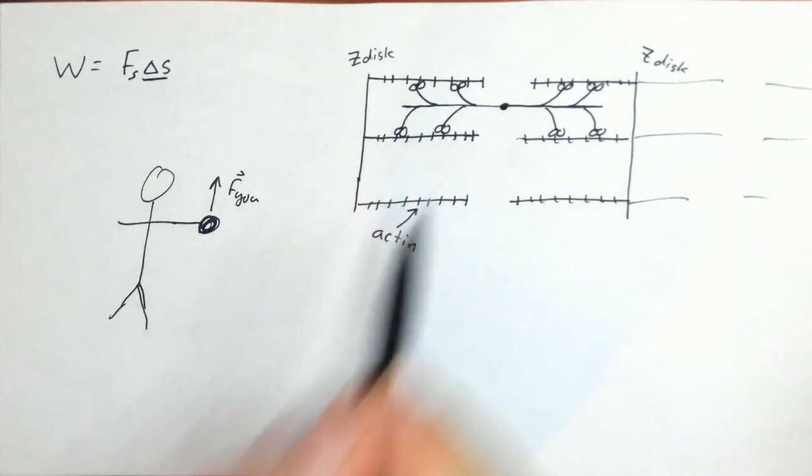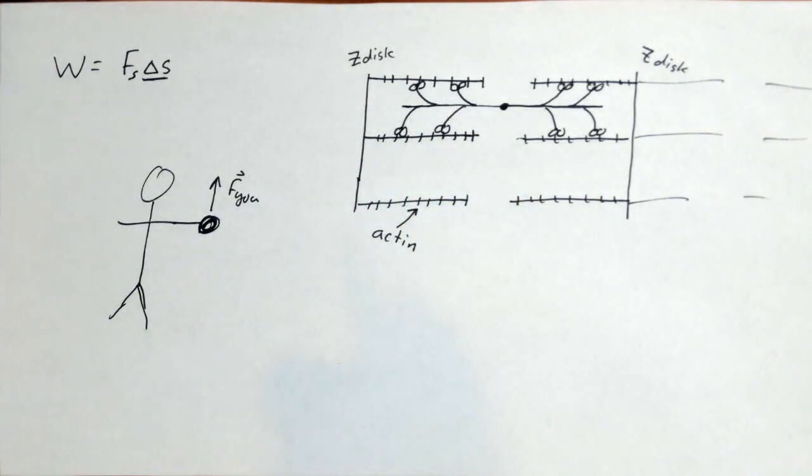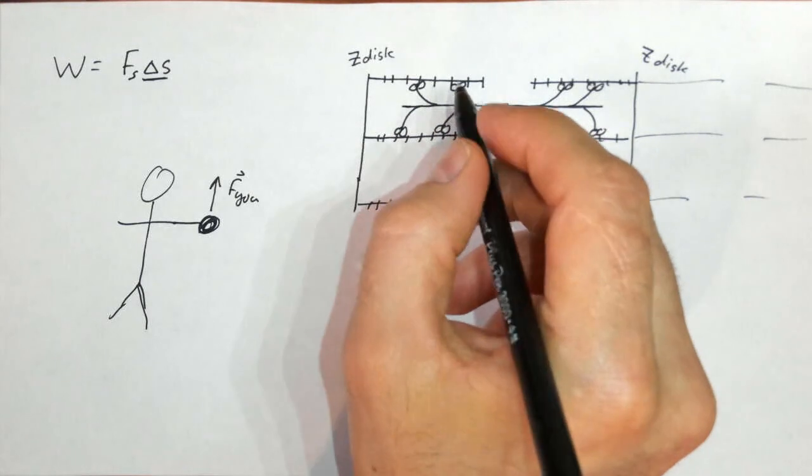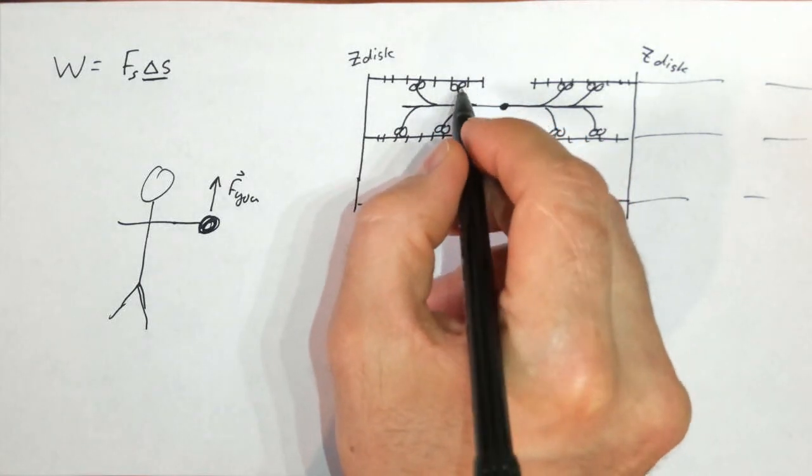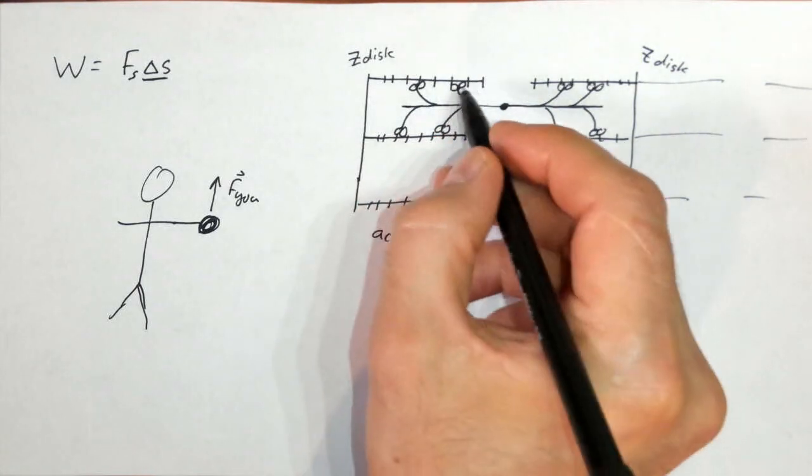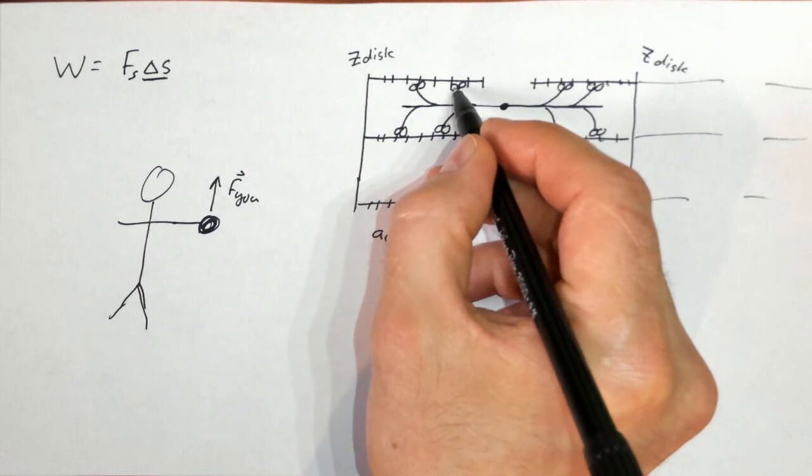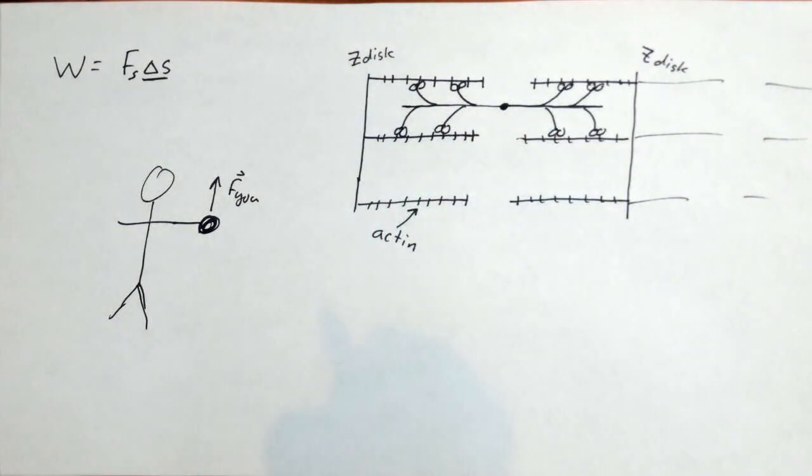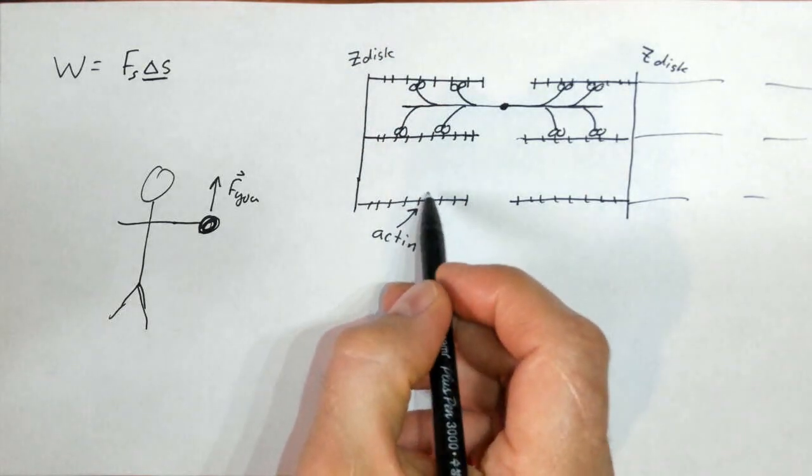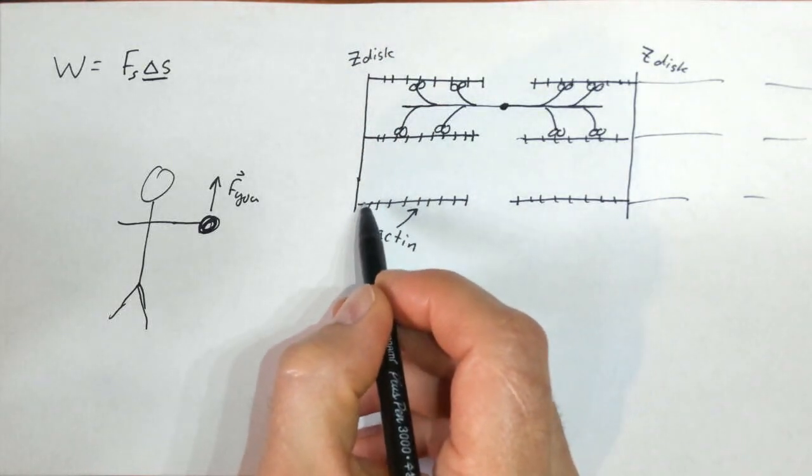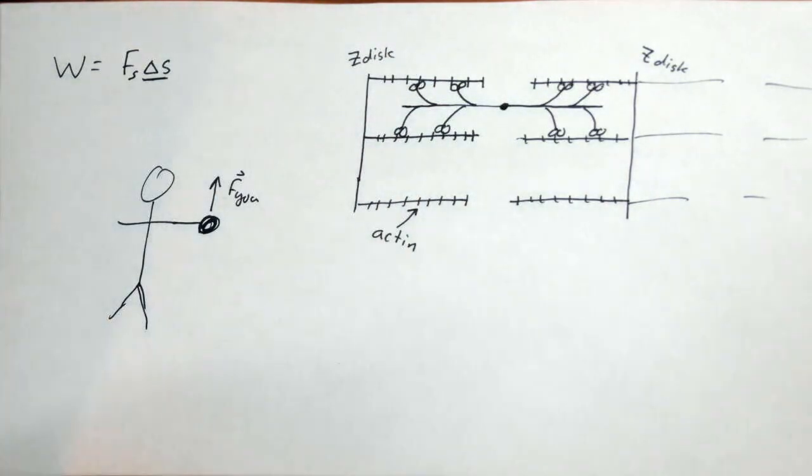And these things are called molecular motors. This one is a myosin actin molecular motor. And these feet actually have receptors or their conformation fits into the grooves of the actin filament. And they take steps by hydrolyzing ATP.